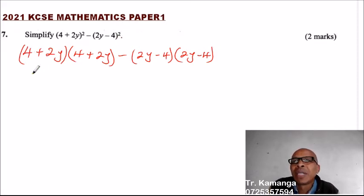So you multiply 4 times 4, that will give you 16. 4 times 2y, that will give you 8y. 2 times 4 is 8y plus 8y. Then you have plus 2y, that is 2y times 2y, that should give you 4y² minus.